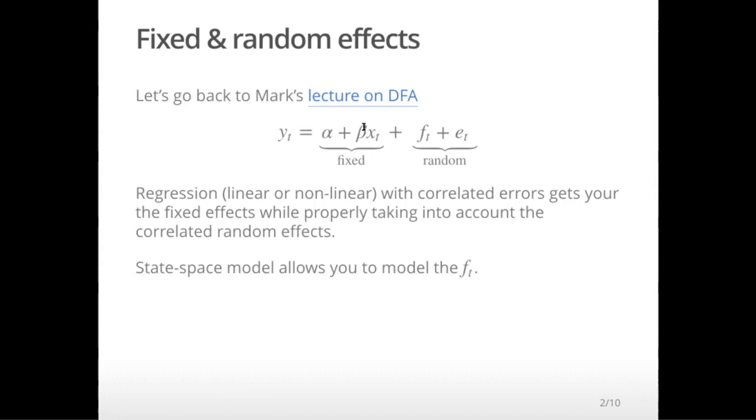When you are doing a regression, linear or nonlinear, with correlated errors, what that's allowing you to do is to estimate these parameters correctly. And it's going to take into account that there's correlation in your errors and that your data are not entirely independent.